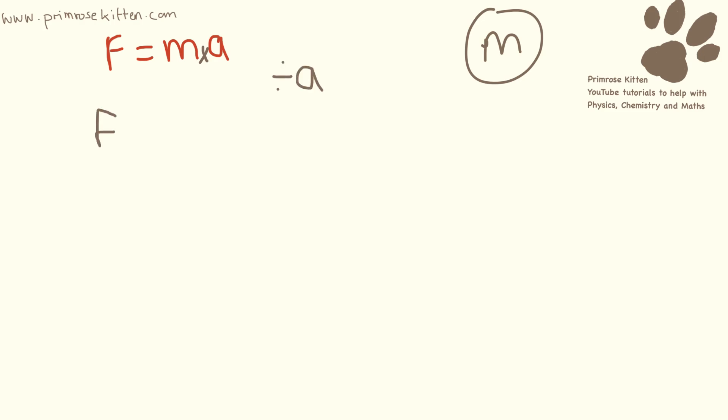So we have force divided by acceleration equals mass times acceleration divided by acceleration. Now a divided by a cancel each other out. So we end up with force over acceleration equals mass.